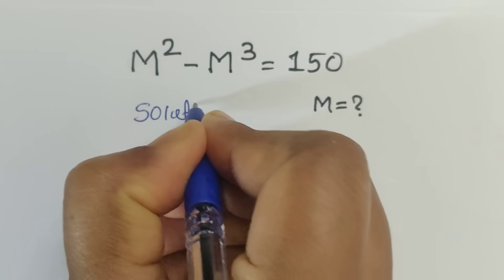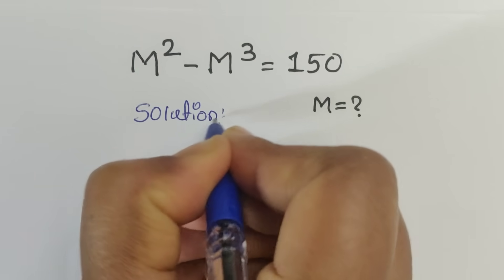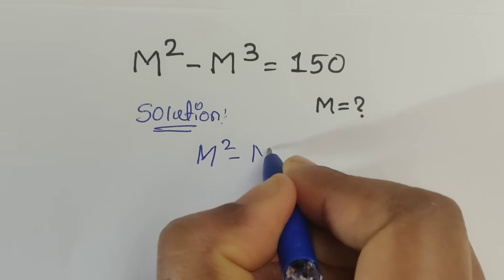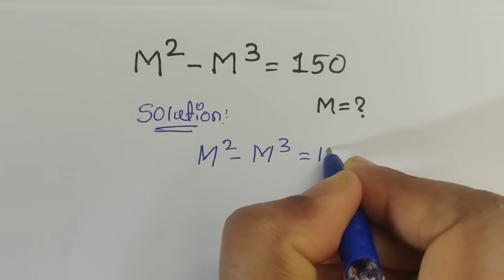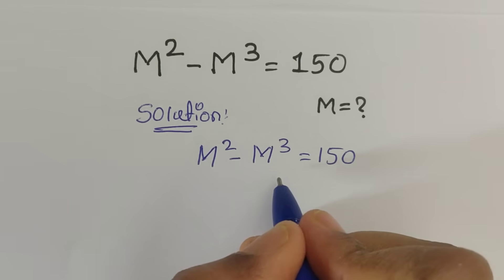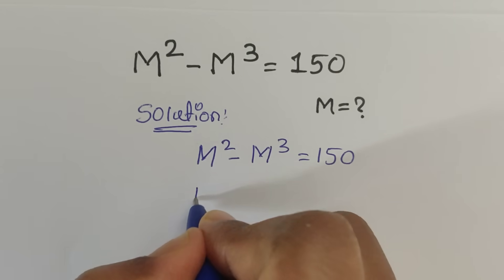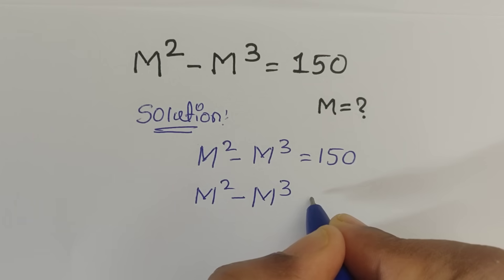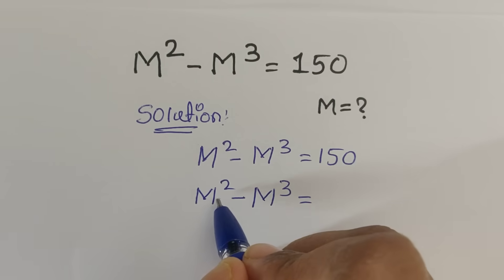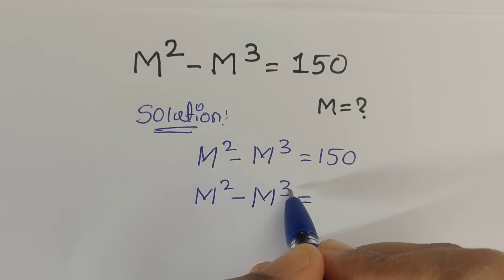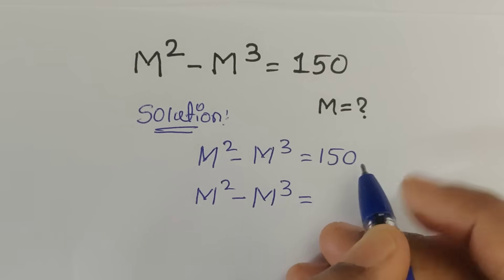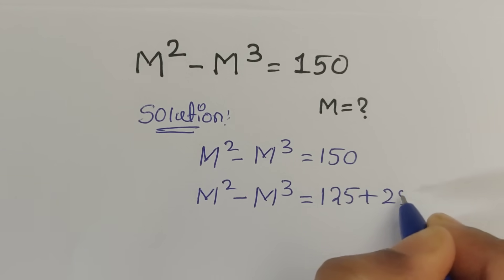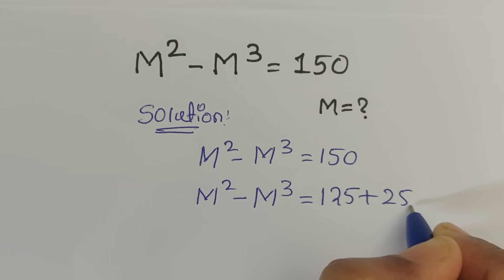Solution. We have given m squared minus m cubed equals 150. So now we can write this m squared minus m cubed equal. To match the powers of 2 and 3, we can write 150 as 125 plus 25, so 125 plus 25 which is equal to 150.